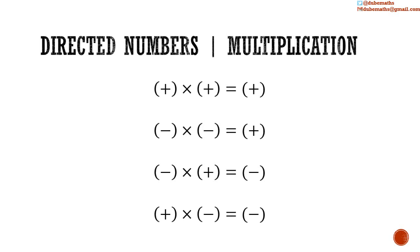To summarize: when multiplying two numbers with the same sign, the result is a positive number. And when multiplying two numbers with opposite signs, the result is a negative number.